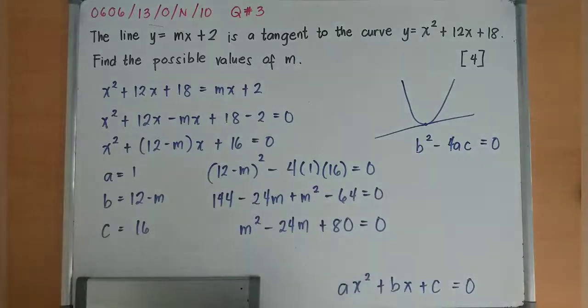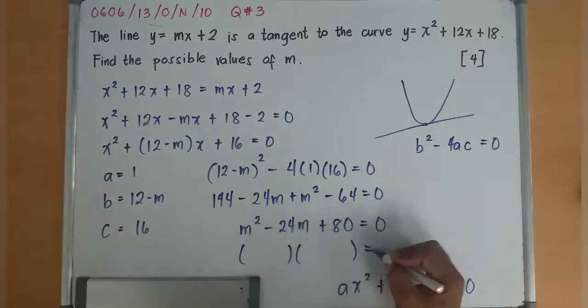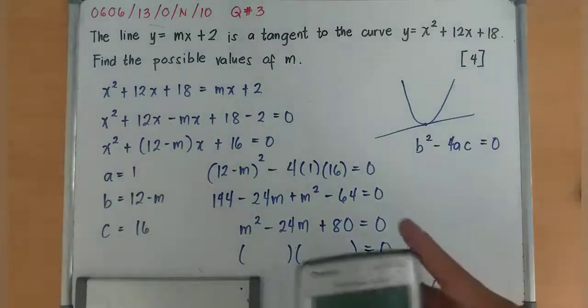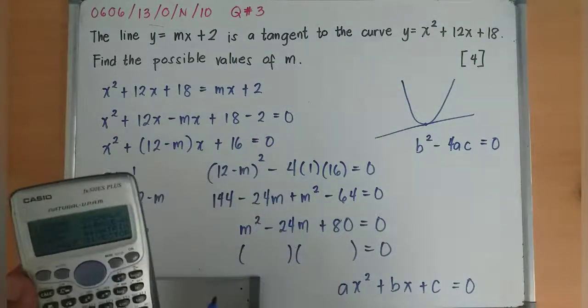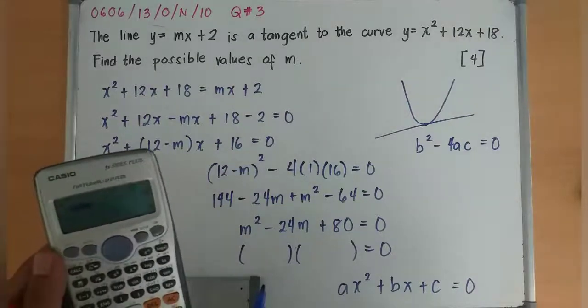Now I need to factorize this out to find out what are the values of m. I can use my calculator. Mode, Equation. Then I have 1, -24, and 80.